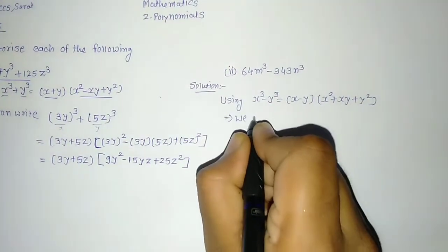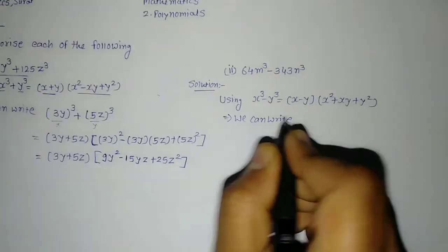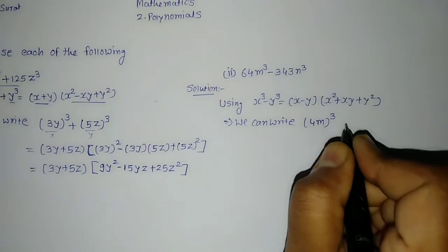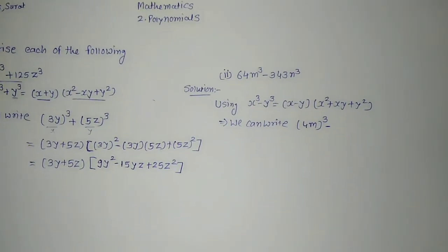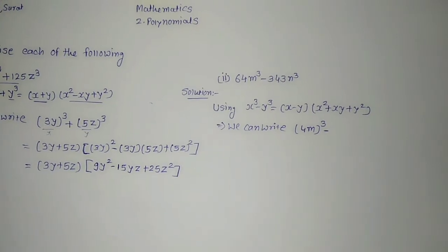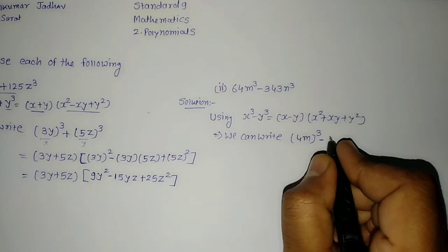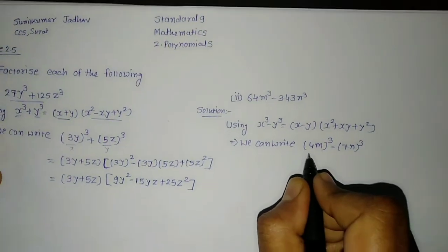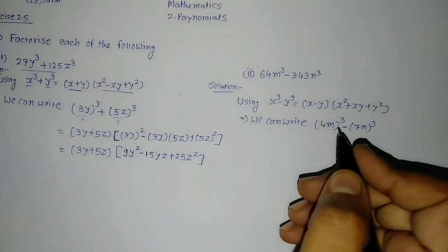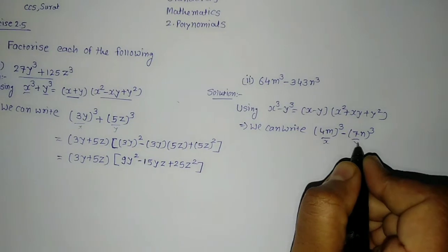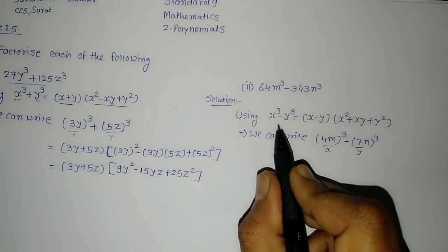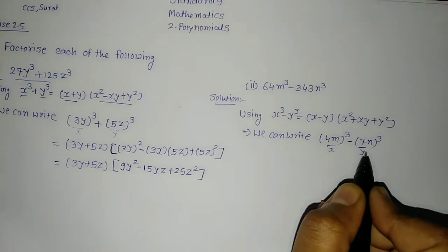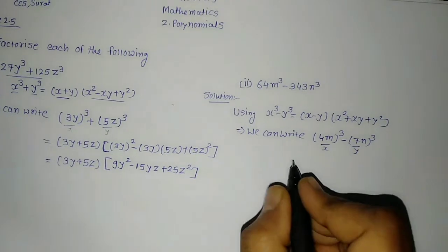64 is a cube of 4, so I can write 4m whole cube. Remember that 343 is a cube of 7, so I will write 7n whole cube. So 64m cube minus 343n cube is written in the format of x cube minus y cube. We will use this particular formula, considering 4m as x and 7n as y, so it is like x cube minus y cube.